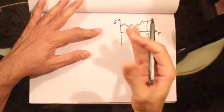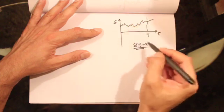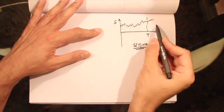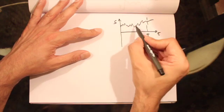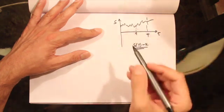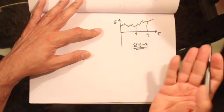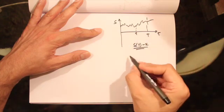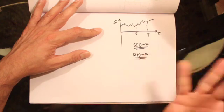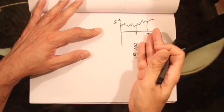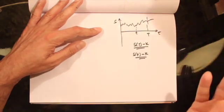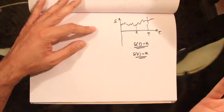The main difference with an American option is that the payoff is pretty much the same, but we can exercise the option at any point in time. We could exercise the option before expiration, and if we exercise the call option at time t, we get S(t) minus K as the payoff. That is the key feature of an American option.